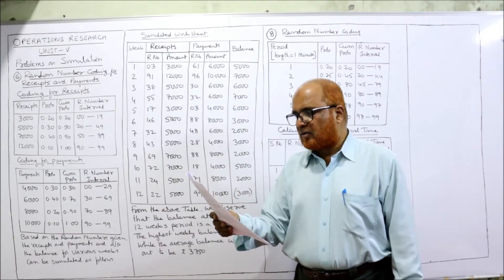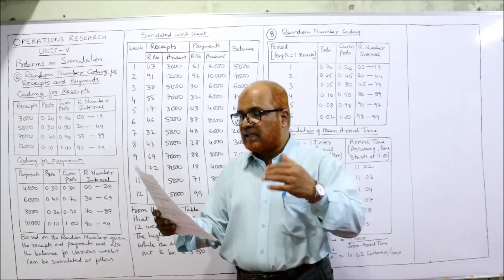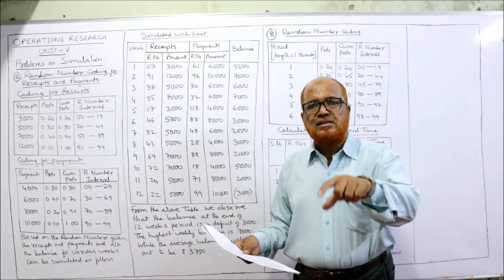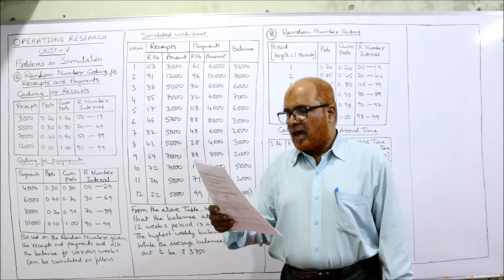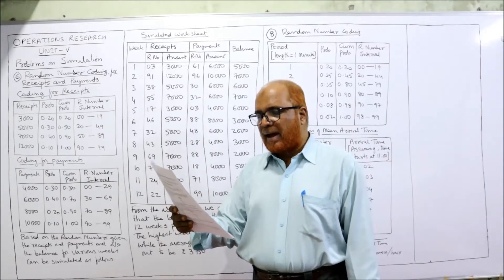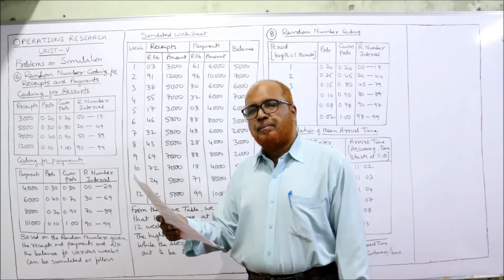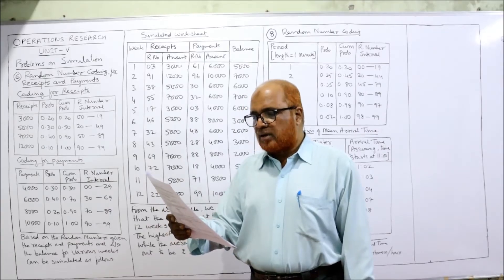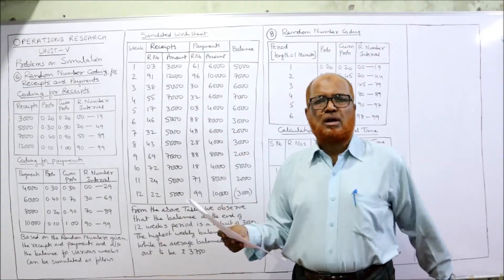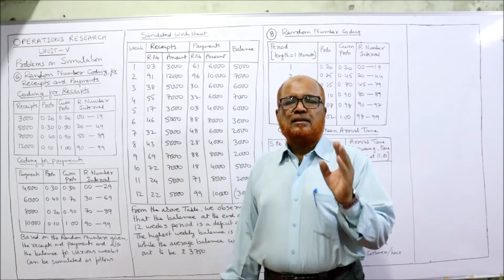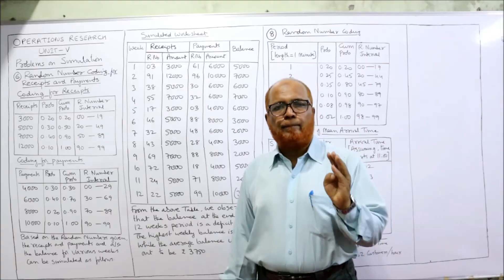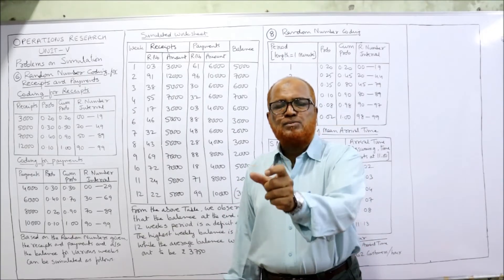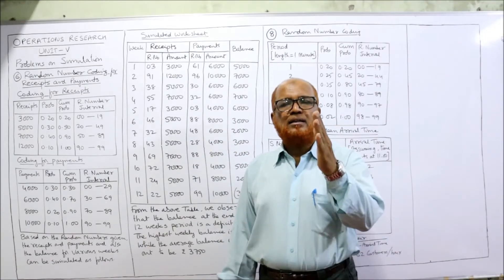Using the given random numbers, simulate the weekly pattern of receipts and payments for 12 weeks of the next quarter. We have to find the simulated receipts and simulated payments for 12 weeks, assuming the opening bank balance was 8,000. We need to find: the estimated balance at the end of 12 weeks, the highest weekly balance, and the average weekly balance. Since receipt minus payment equals balance, we can get the balance every week from week one to week twelve.